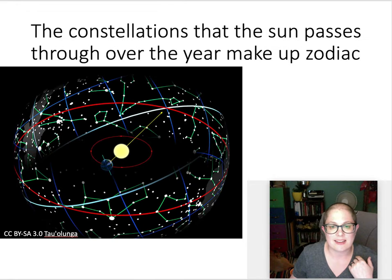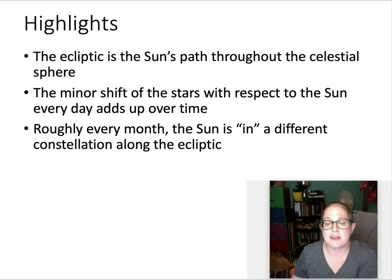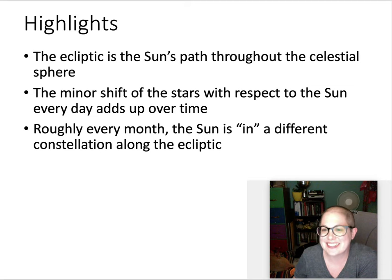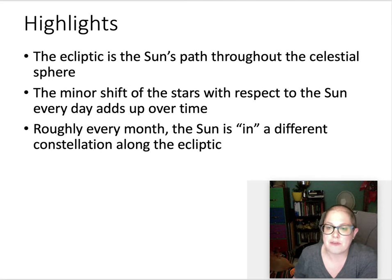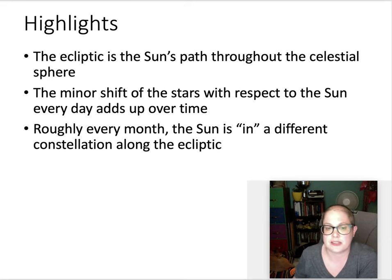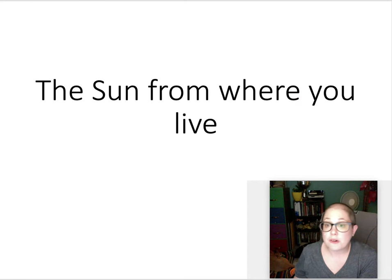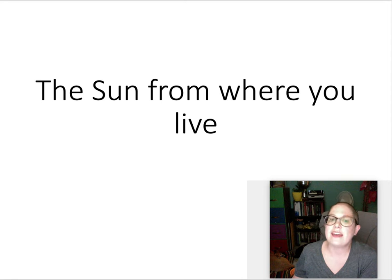To summarize: the ecliptic is the Sun's path through the celestial sphere. A minor daily shift of the stars with respect to the Sun adds up over time so that roughly every month the Sun is in a different constellation along the ecliptic. Where you are on Earth determines what the Sun is going to look like throughout the day and year.